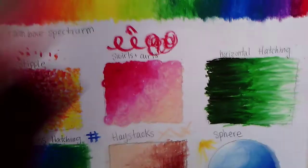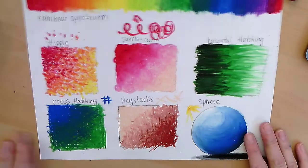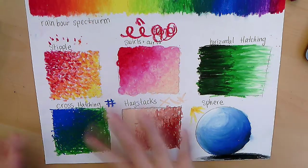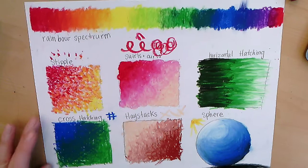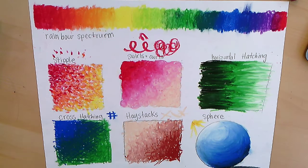So your project should look like this now, nice and complete with a rainbow on top and all of the six sections filled in and your name on it. Turn it into Canvas please. Have a good day.